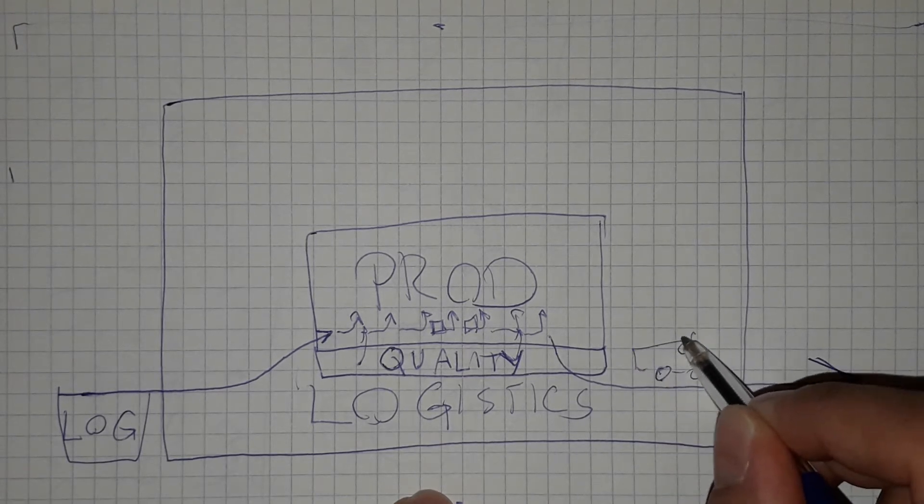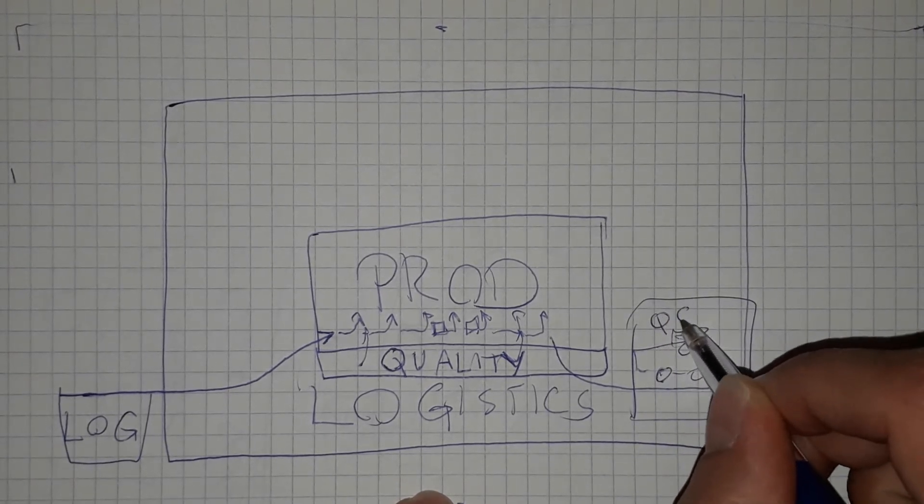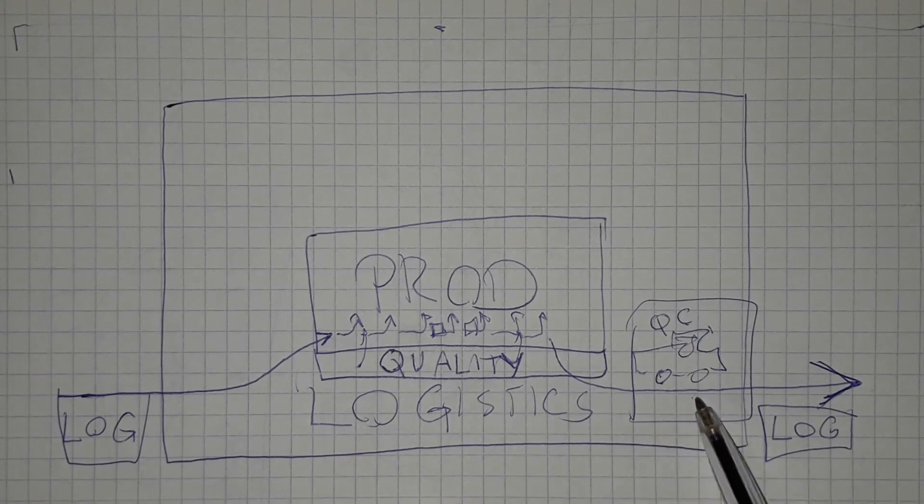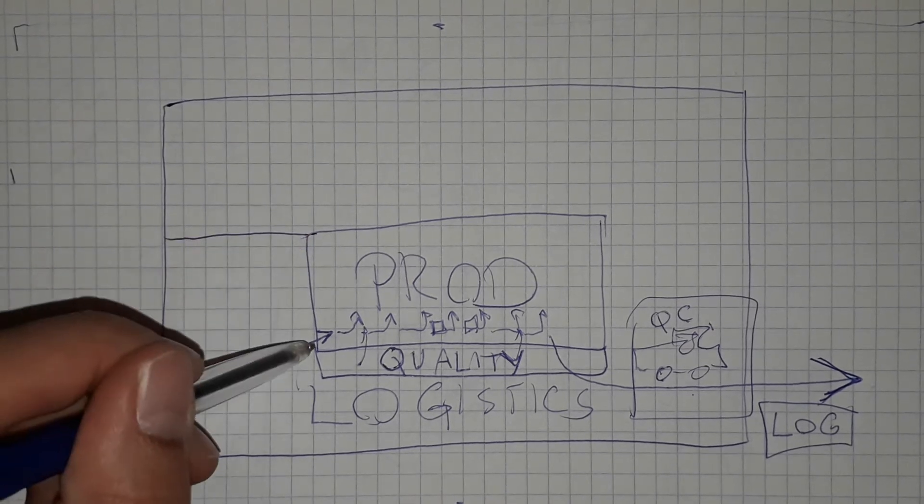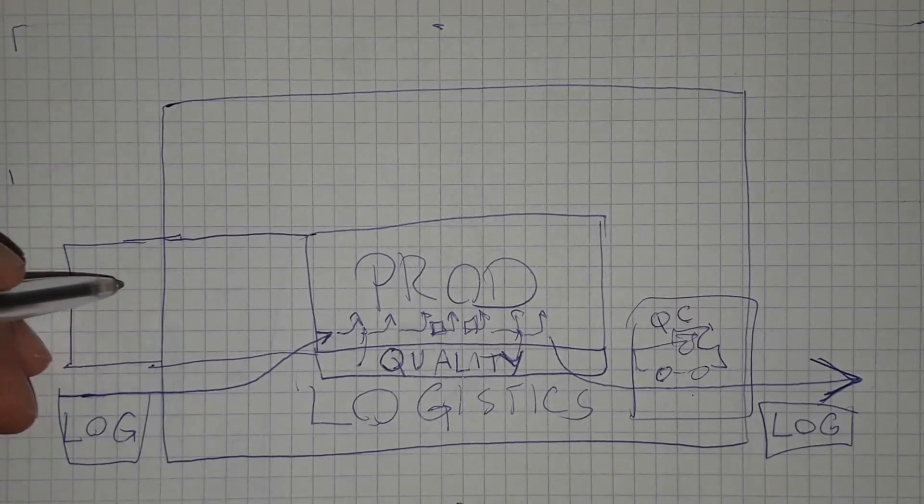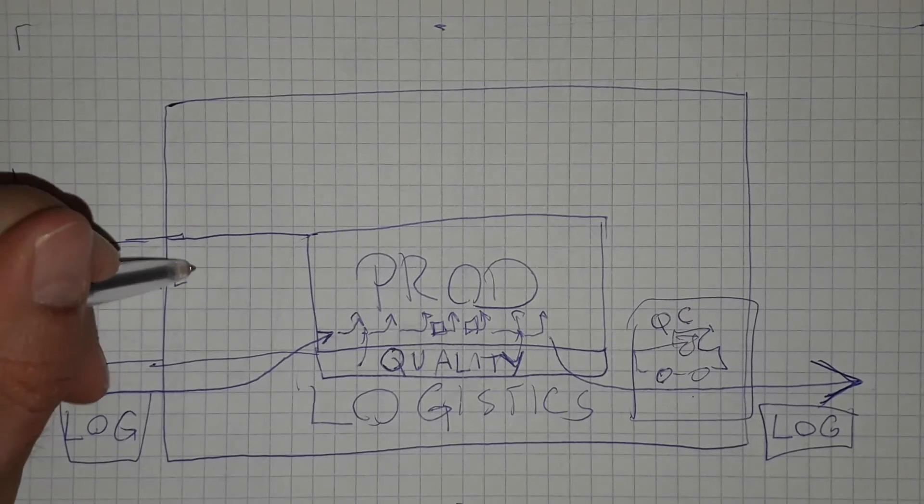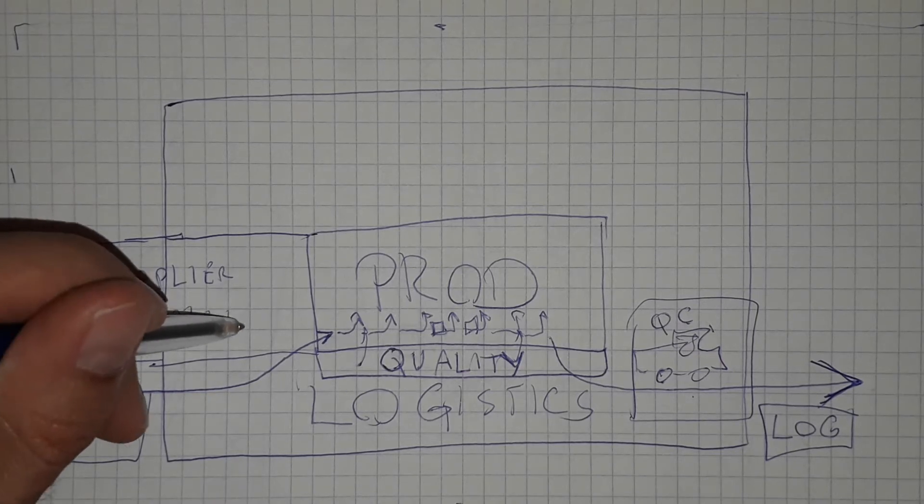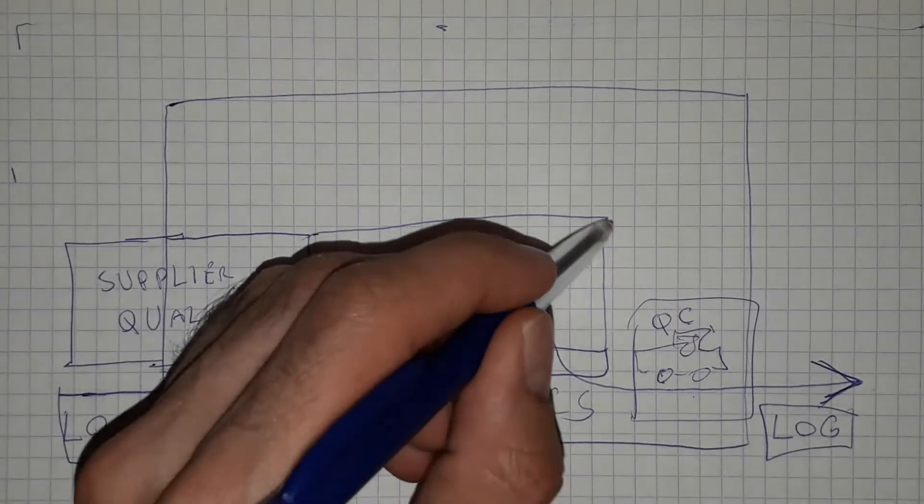It needs to be a quality department, quality control, which is controlling the outbound. We need to have a quality department which is dealing with the incoming parts, so this will be the supplier quality. Then we have the production quality and then we have the customer quality.